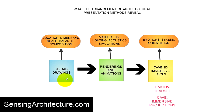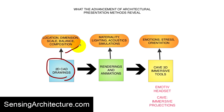First, we'll start with the 2D CAD drawing. With 2D CAD drawings, you can typically tell things like location, dimension of objects, scale of objects, the overall design balance, and composition. 2D CAD drawings are great for construction documents and for mirroring back what your design will look like from a balance or composition standpoint.